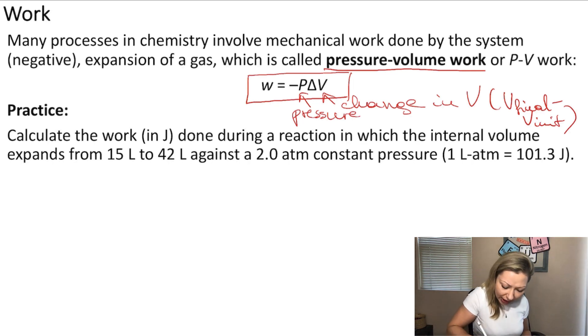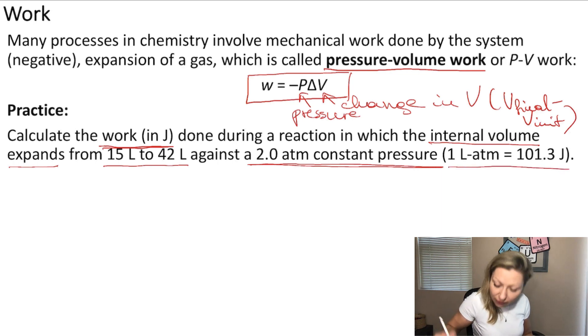Let's calculate the work in joules that was done during a chemical reaction in which the internal volume expands from 15 liters to 42 liters against a 2 atm constant pressure. And we have actually the conversion from liter atms to joules. Okay.